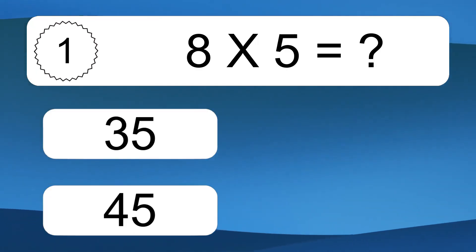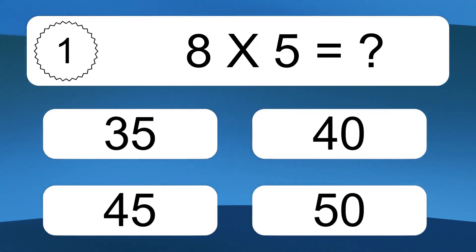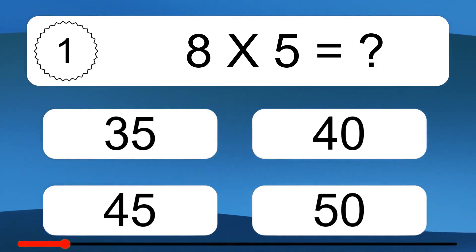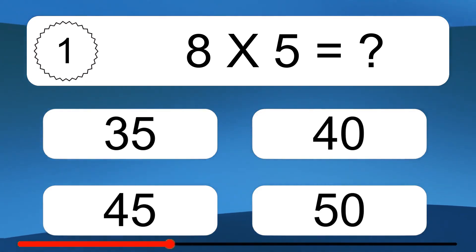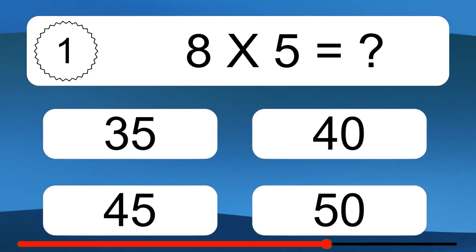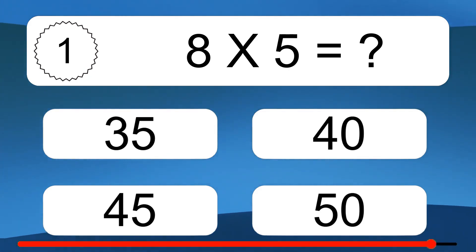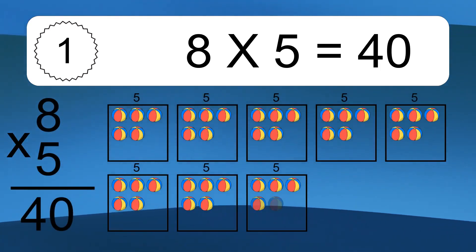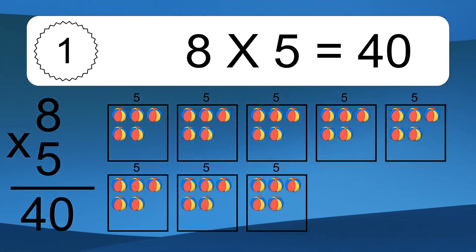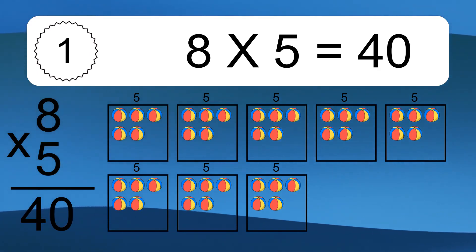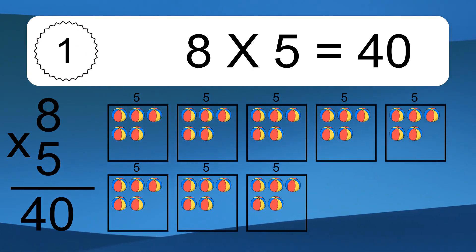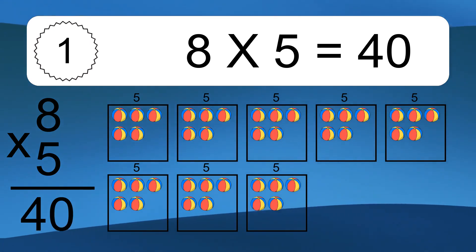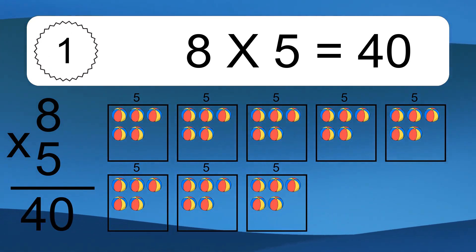8 times 5 equals what? 8 times 5 equals 40. We have 8 boxes, and each box has 5 colorful balls inside. If you count all the balls in all the boxes together, you will have 8 times 5 balls. This equals 40 balls.